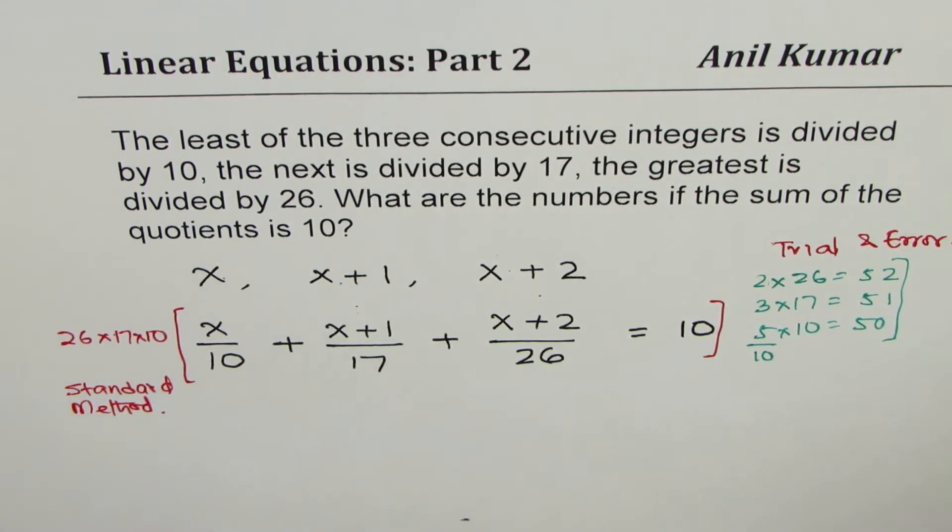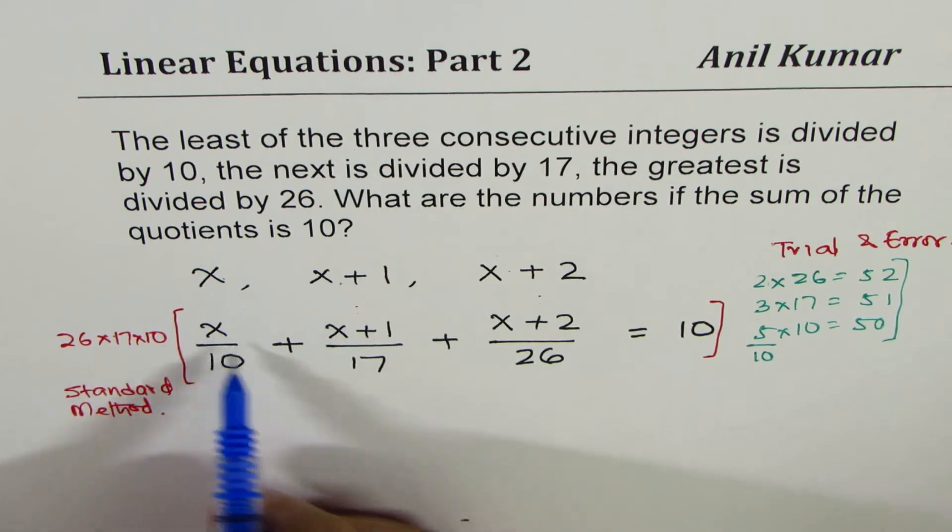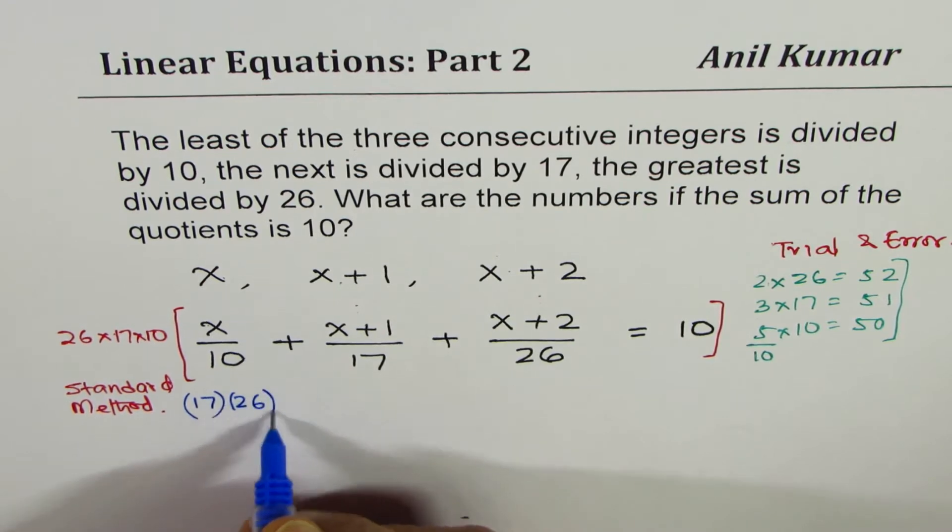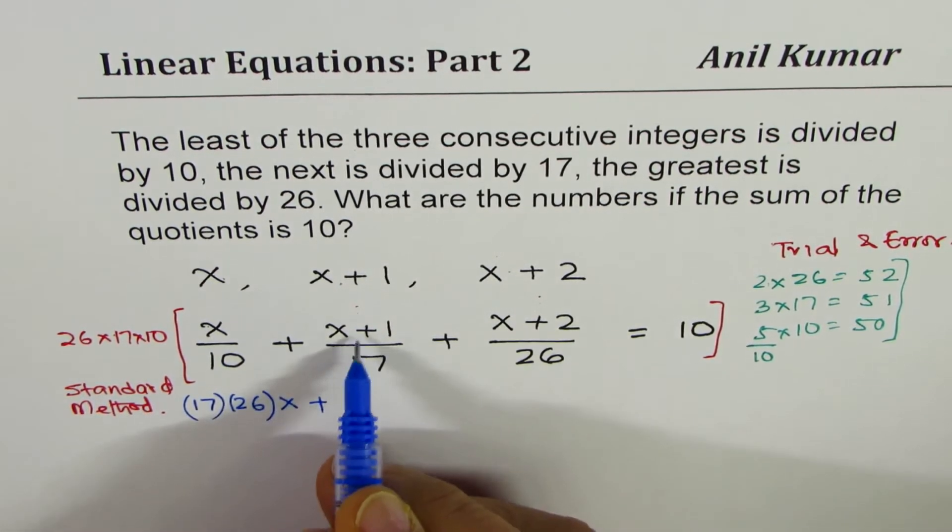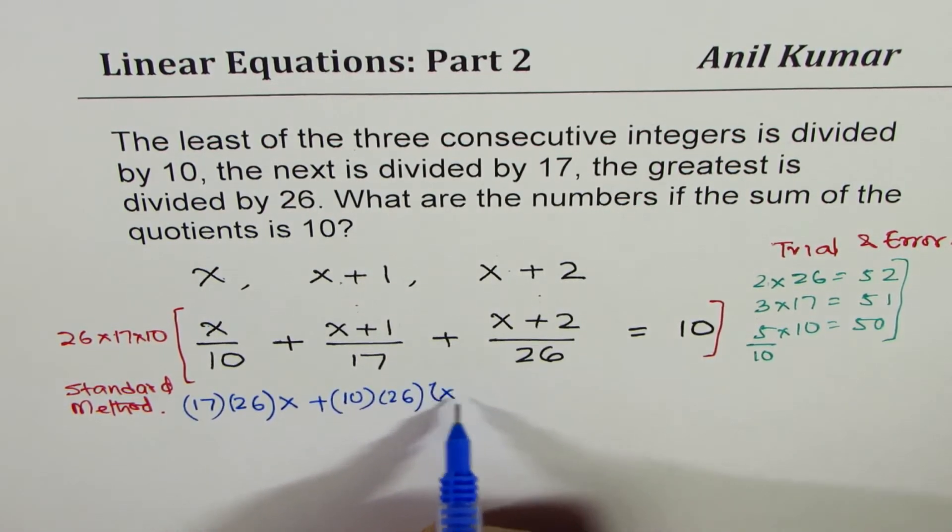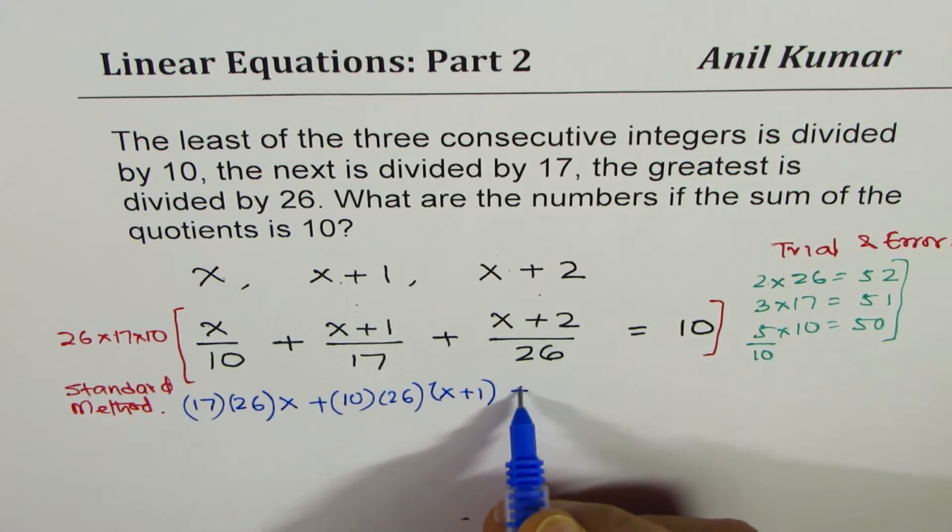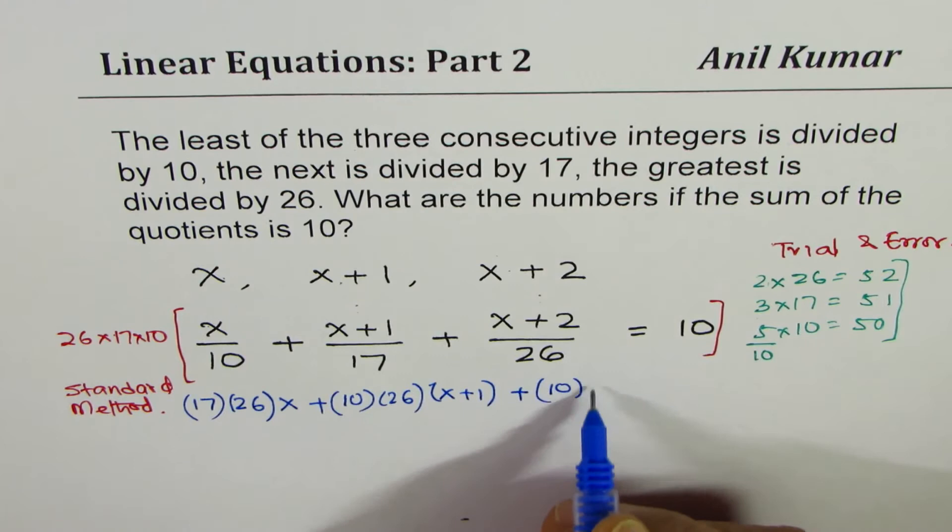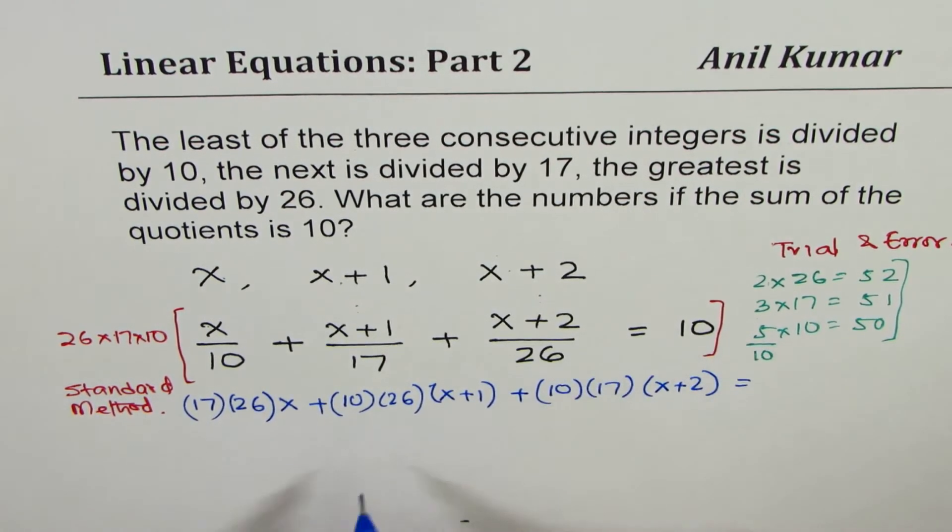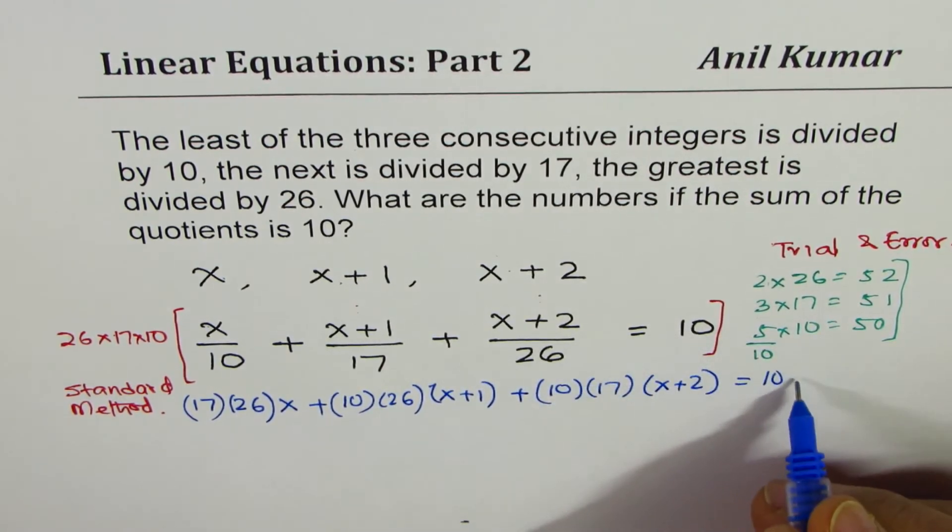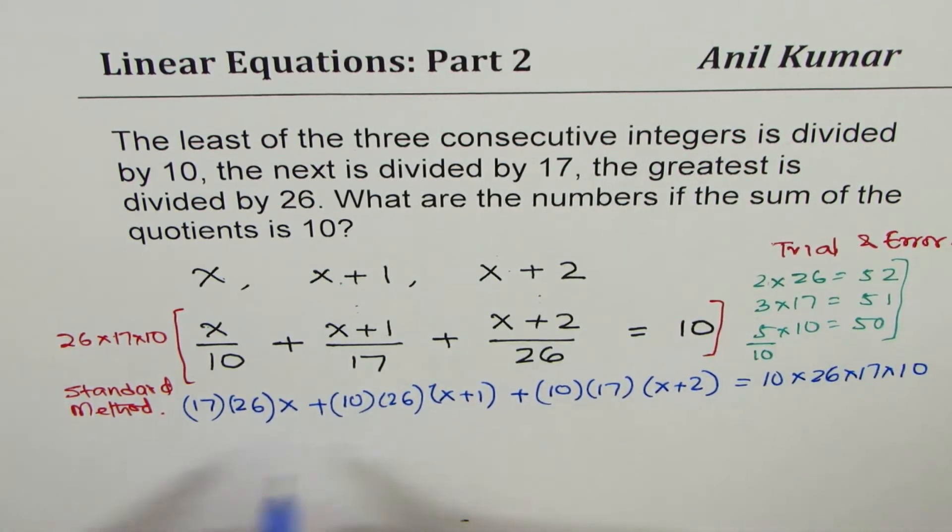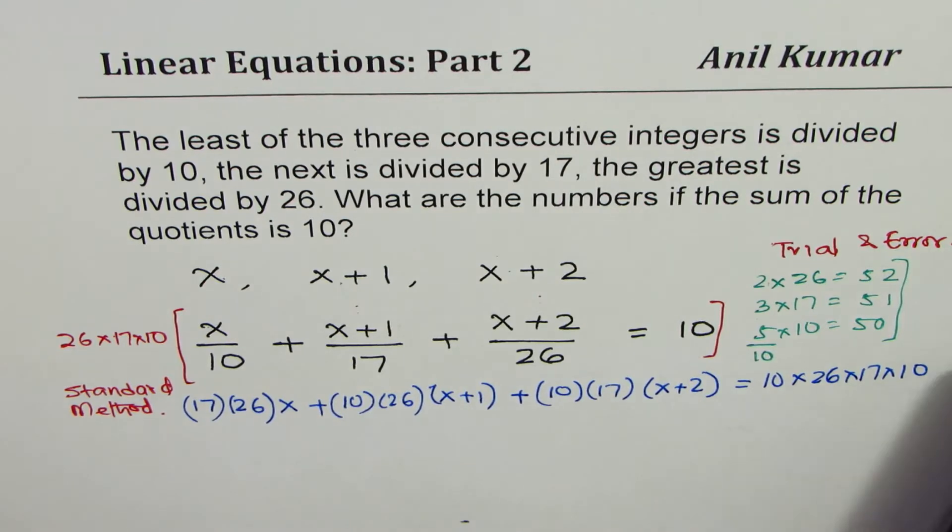So what you get here is, let's rewrite. You get 17 times 26 times x, 16 times 26 times x plus 1, here we get 10 times 26 times x plus 1. And in this case, we get 10 times 17 times x plus 2. And here we get 10 times 26 times 17 times 10. That is what we get.